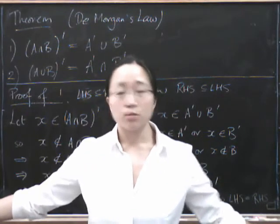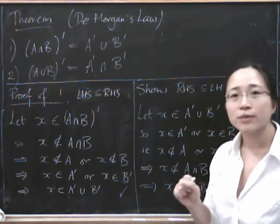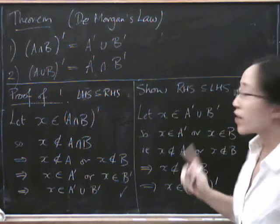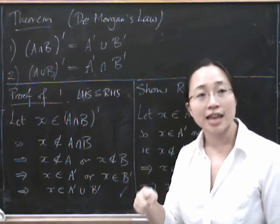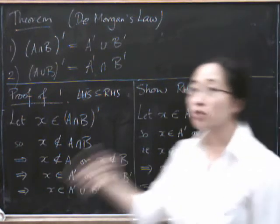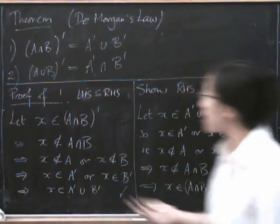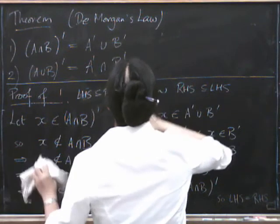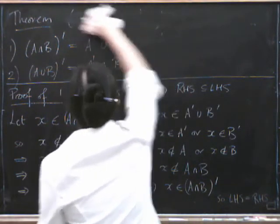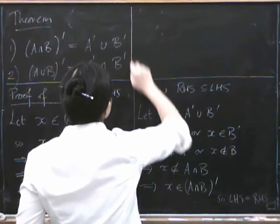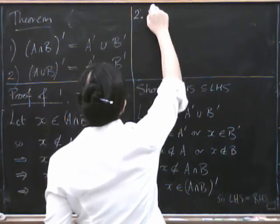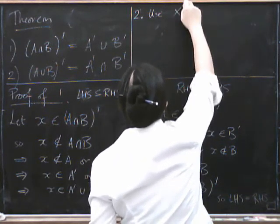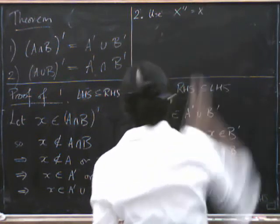So what about the second part of De Morgan's Law? There are two ways we could do this. One is we could prove it from scratch just like this. Or the other is we could use our previous lemma — it's always good to use a previous lemma because it might save us some work, and that's exactly what happens in this case. So for part two, I'm going to use the fact that in general, X double complement equals X for every set.